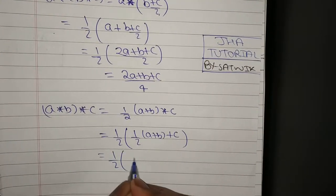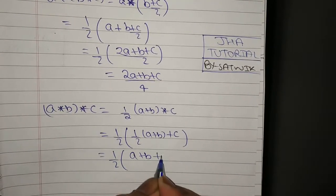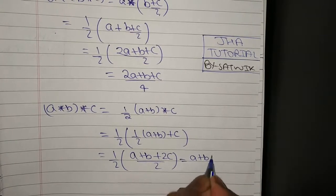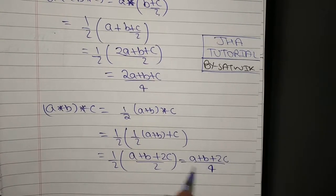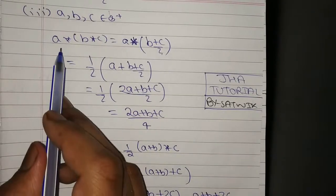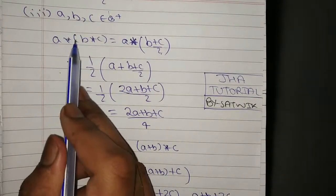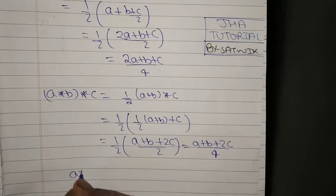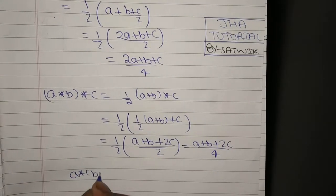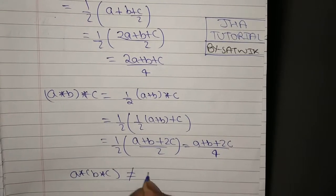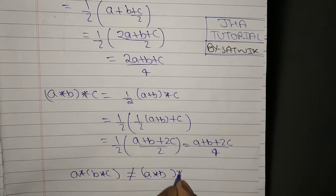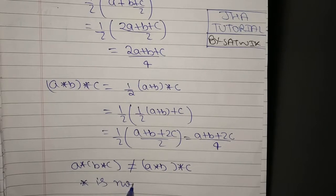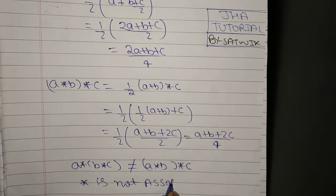For a★(b★c), we get (a + b + 2c)/4. Since (2a+b+c)/4 ≠ (a+b+2c)/4, we conclude that (a★b)★c ≠ a★(b★c), meaning the operation star is NOT associative.